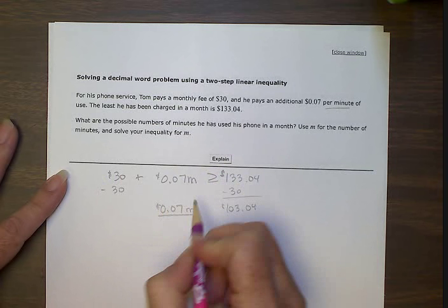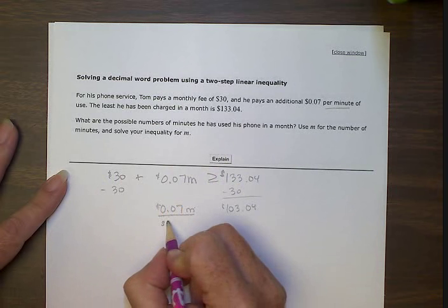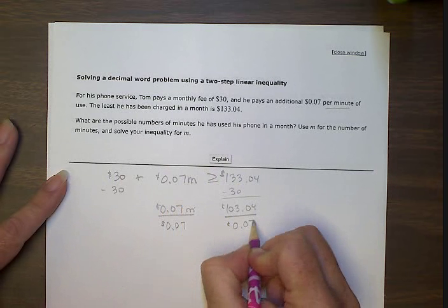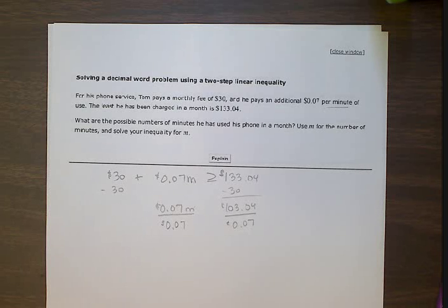Now we need to divide by the coefficient, which is the 0.07. Well, I'm going to have to use the calculator to figure that out.